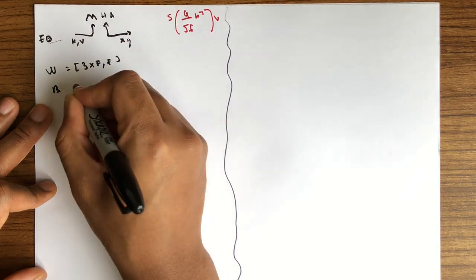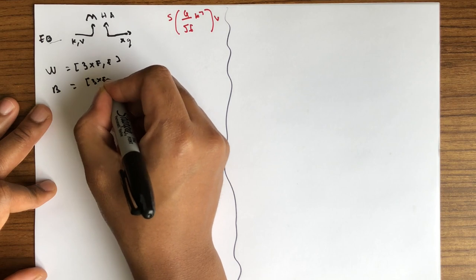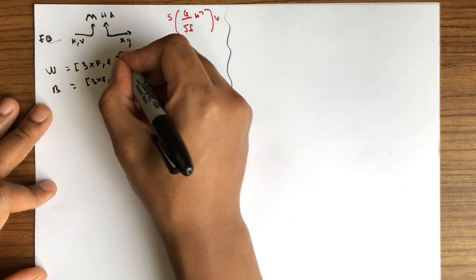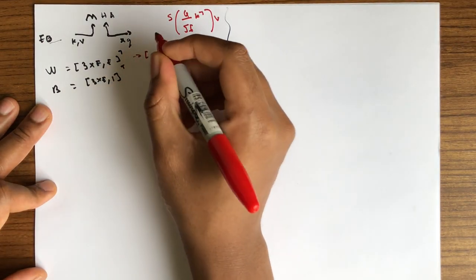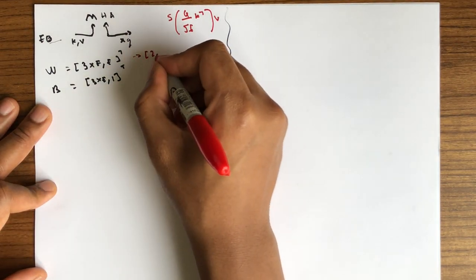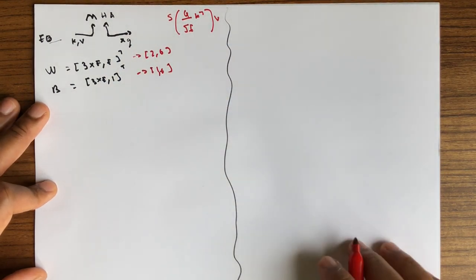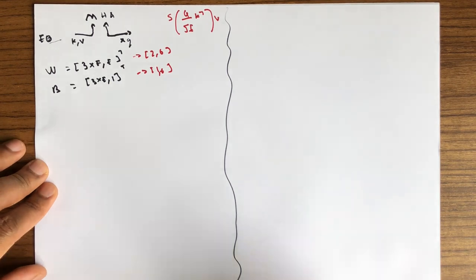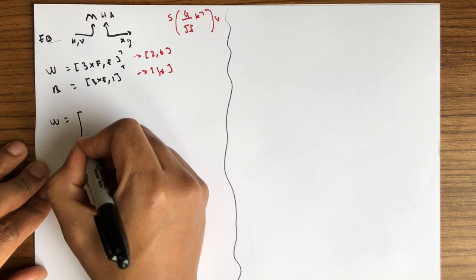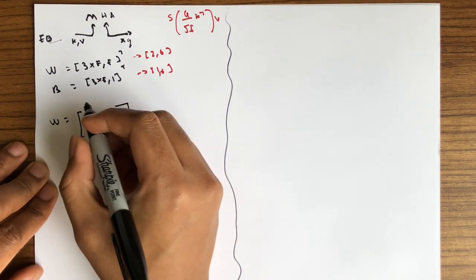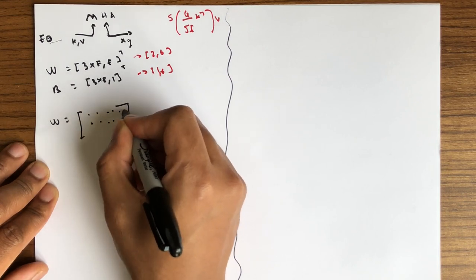B has a dimension of 3 times e by 1. We are going to take the transpose to get a dimension of 256 by 1. Let's visualize W as we did in the previous video.